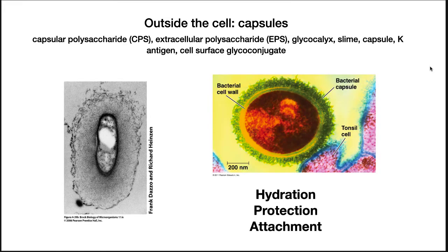We finish up bacterial structure by looking at structures outside the cell wall. Capsules are polymers that encircle the cell. Other names given to the same layer include capsule polysaccharide, extracellular polysaccharide, glycocalyx, slime capsule, K-antigen, cell surface glycoconjugate. Capsules hydrate the cell, protect it from the elements and predators, and help it to stick to surfaces.